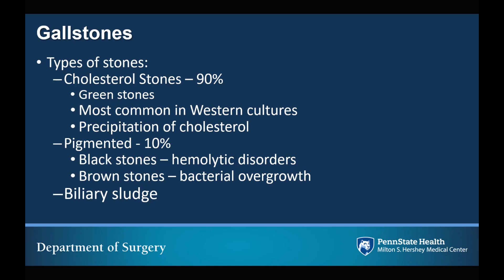There are two types of gallstones that you will encounter. With 90% of stones being cholesterol stones — these are green in appearance, most common in western cultures, and result from the precipitation of cholesterol. Less commonly, pigmented stones, or about 10% of gallstones, are made up of either black or brown stones. Black stones are the result of hemolytic disorders, while brown stones are the result of bacterial overgrowth. Biliary sludge can be clinically significant as it is able to cause symptoms very similar to gallstones.